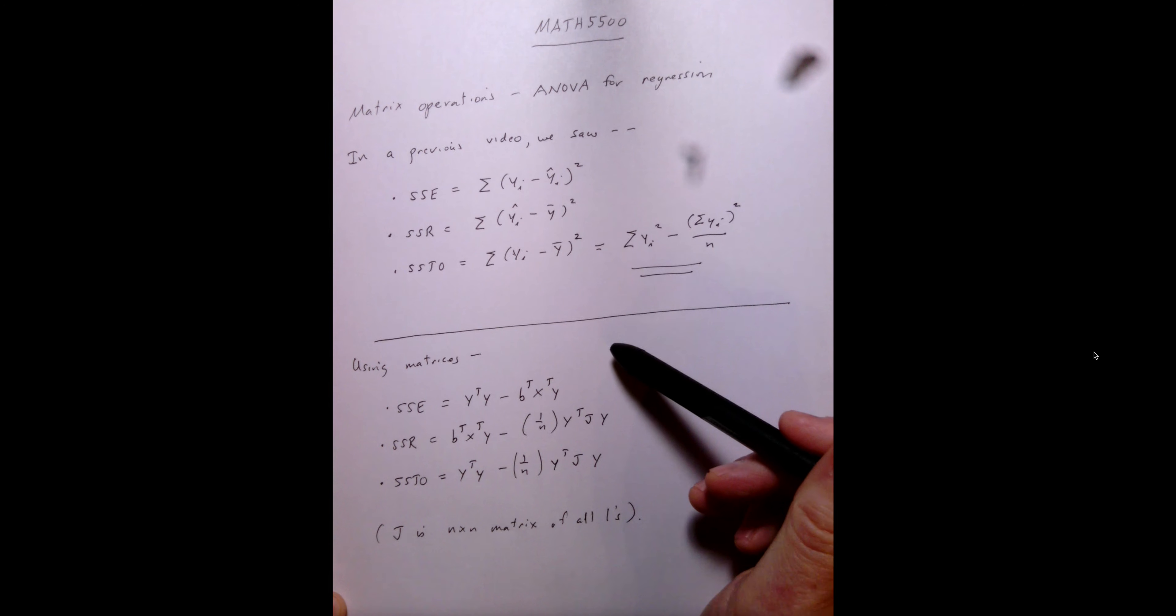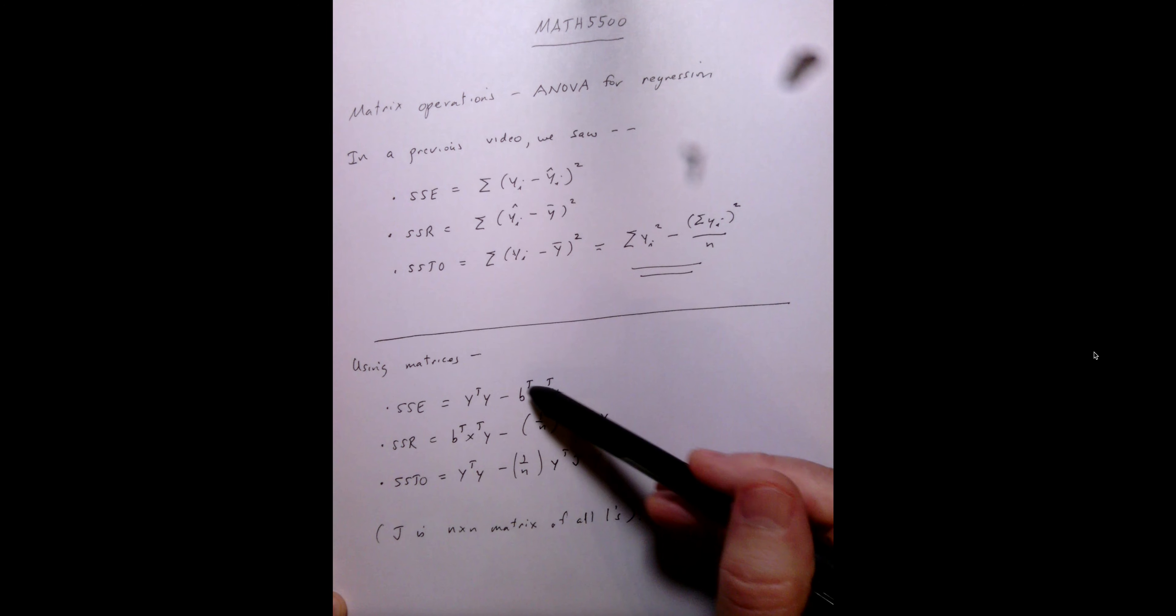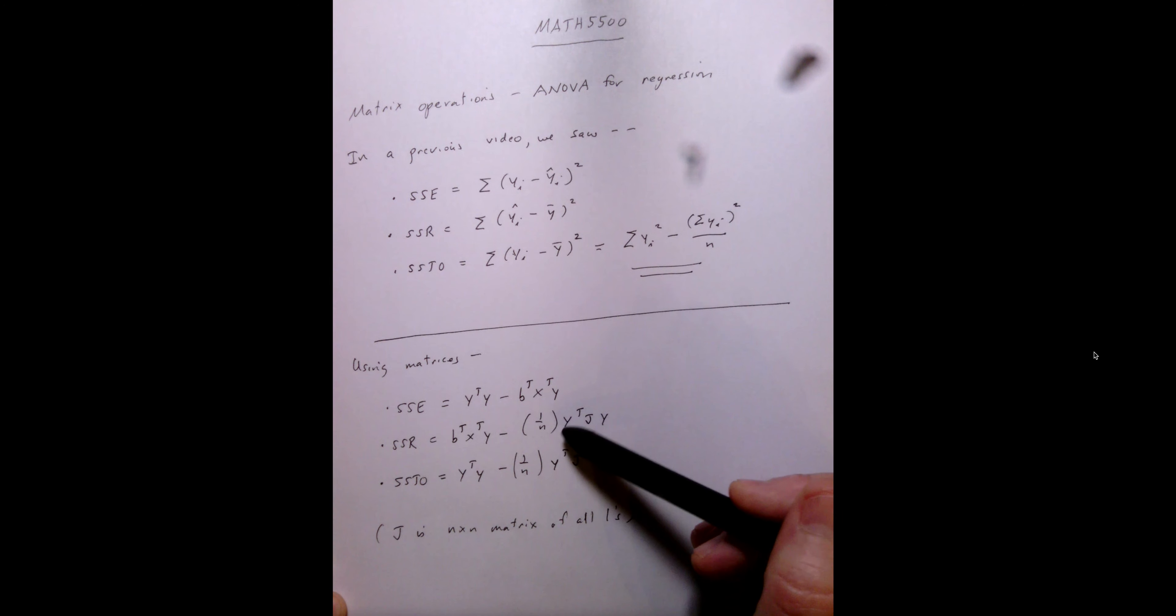So pump the brakes, transition into using matrices to get the sum of squares error, the sum of squares regression, and the sum of squares total. Now, a lot of this stuff looks really familiar. We've used the beta design matrix, our response vector, and we've used the transpose before.